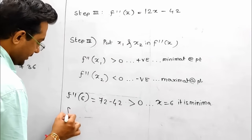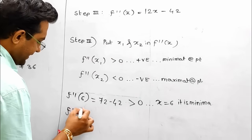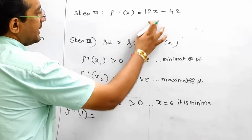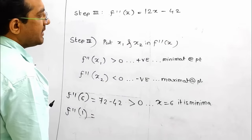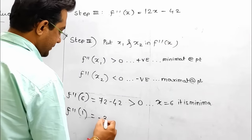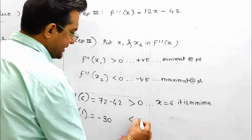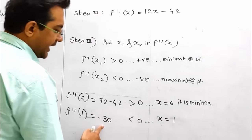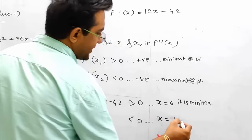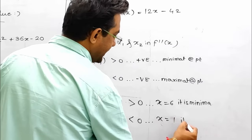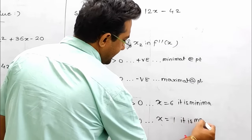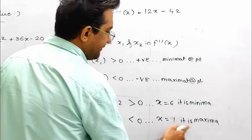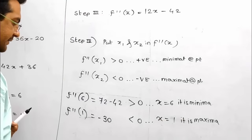Now let's look at f''(1). So 1 × 12 = 12, and 12 - 42 = -30. So it is less than 0. Therefore x = 1 is negative, and negative means maximum. So at x = 1 it is maxima, and at x = 6 it is minima.